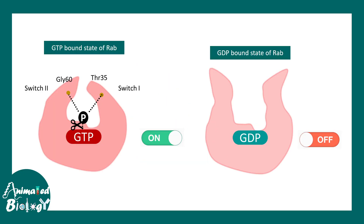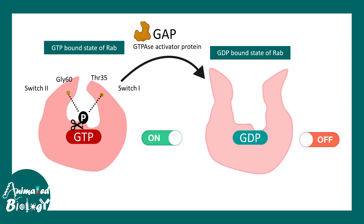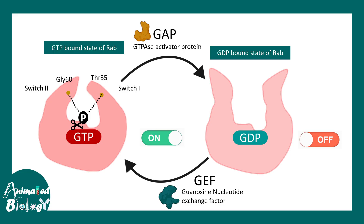The switching between an active and inactive state is augmented or accelerated by two proteins. GAP, or GTPase activator protein, which inactivates the RAB proteins. And GEF, the guanosine nucleotide exchange factor, which activates RAB by exchanging GTP in place of GDP.